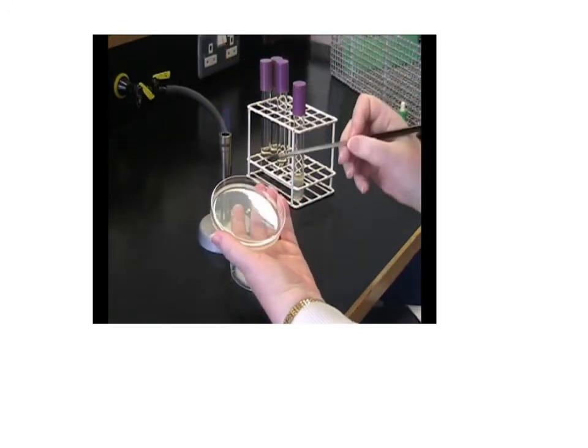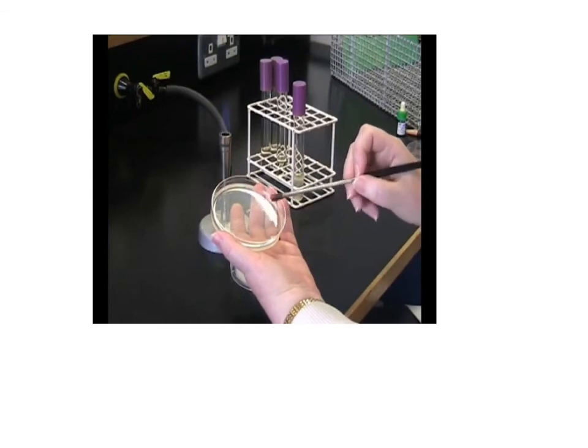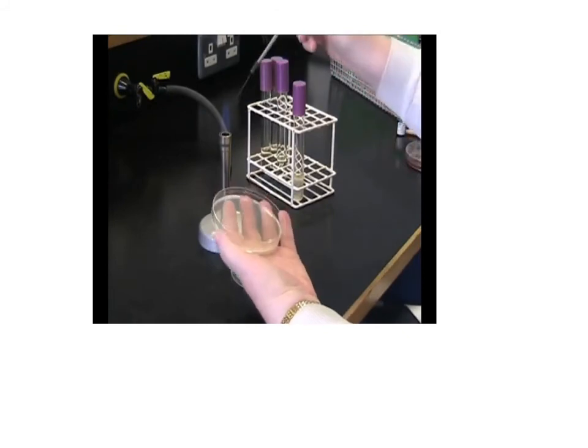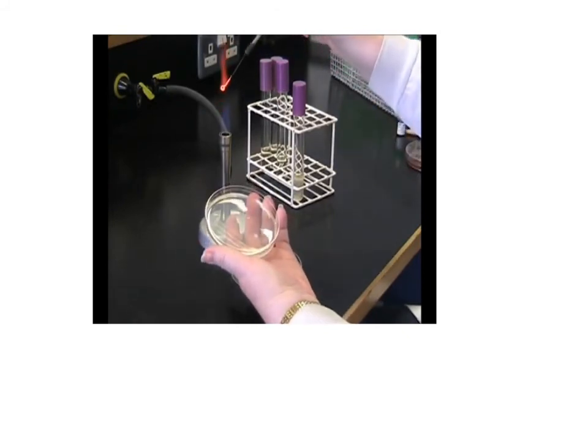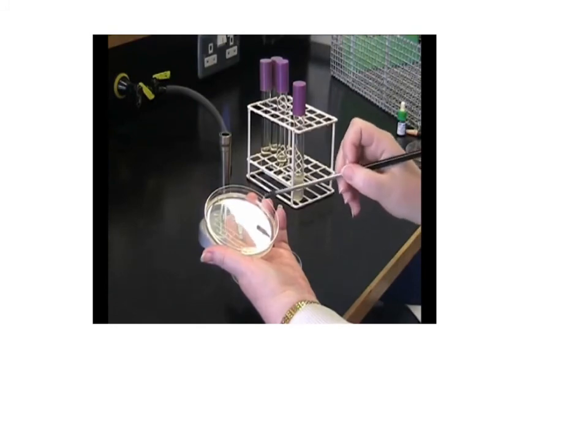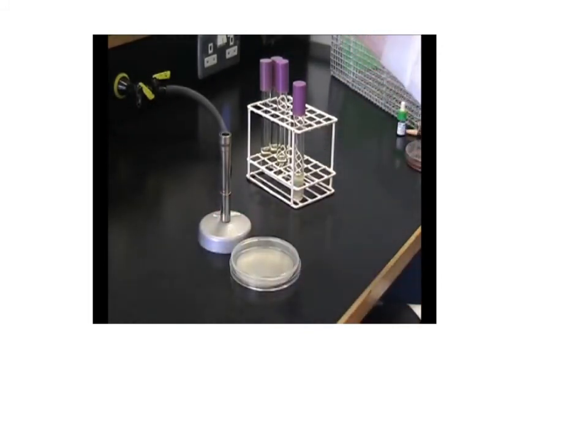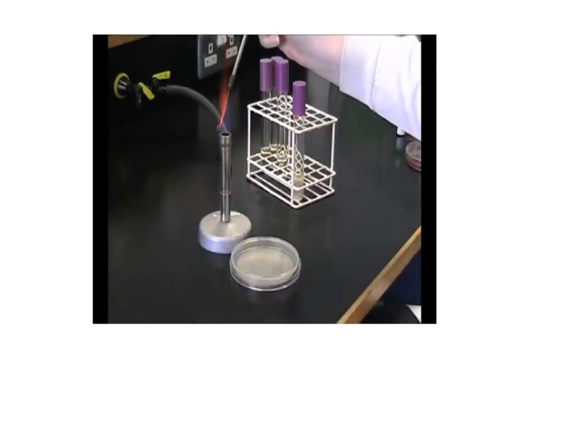Rotate the plate, cool your loop, take one streak from the primary streak across the plate. Remember to flame when you rotate the plate. Continue streaking across in order to dilute your bacteria. Always flame your loop at the end.